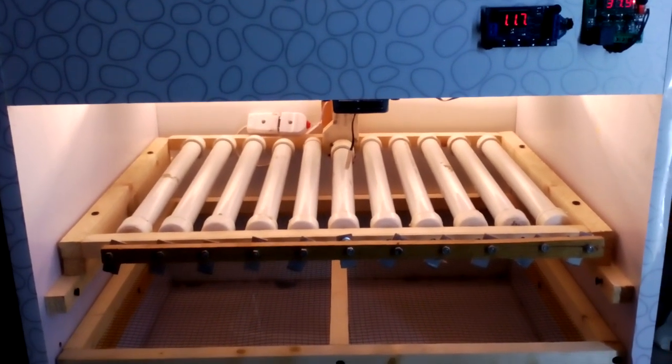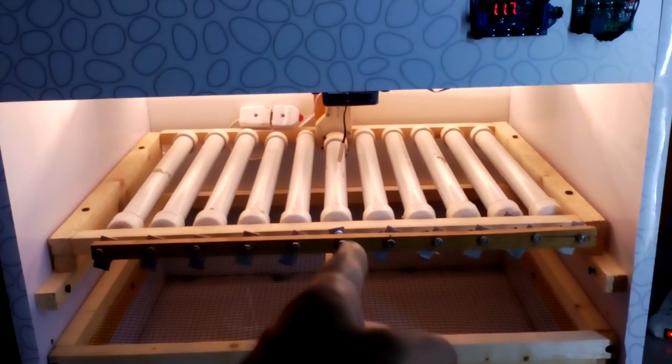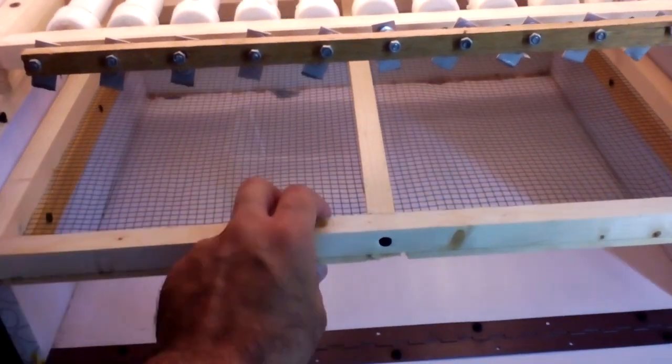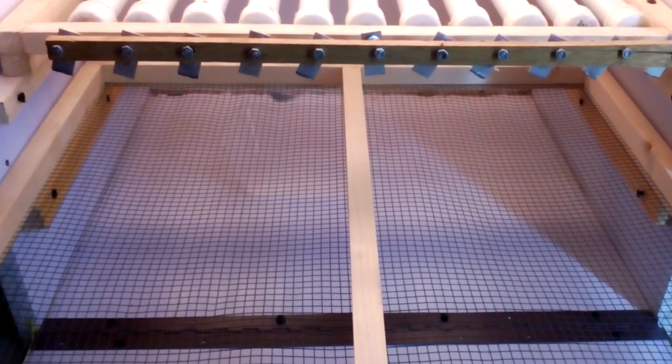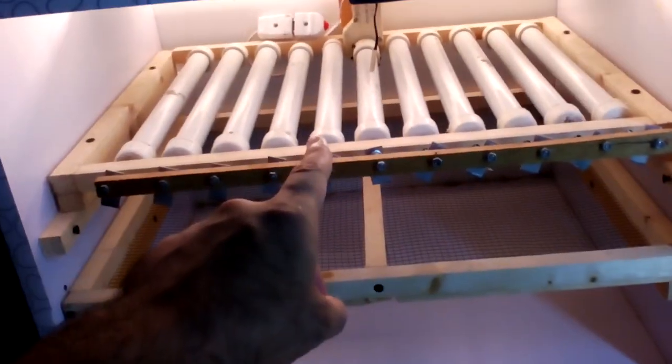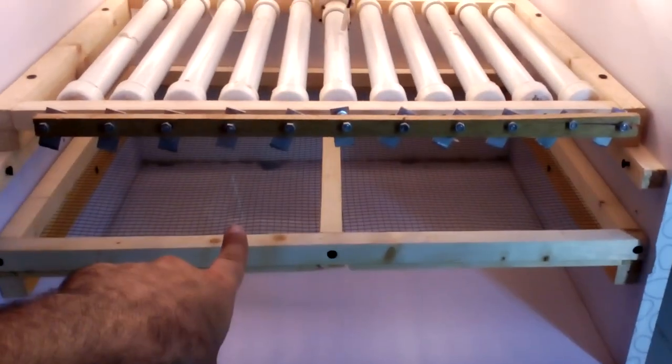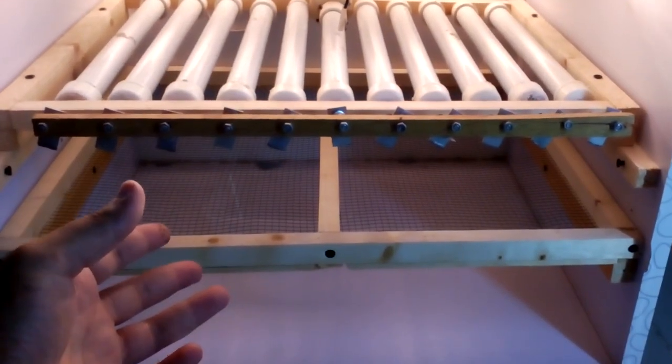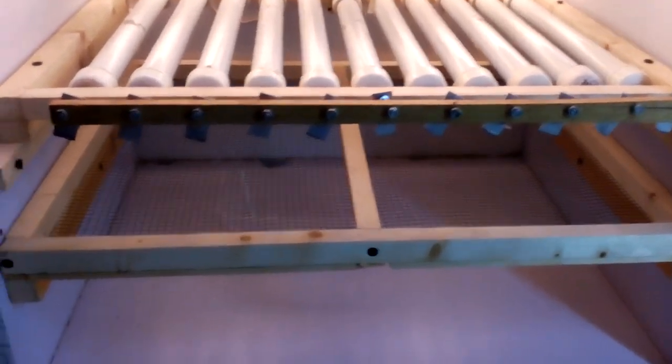You can see how to make this automatic incubator tray. After that we have this hatching tray over here. It can hold about 80 eggs. After 18 days, the eggs have to be transferred from the automatic to the hatching tray, and they're going to hatch on that tray.